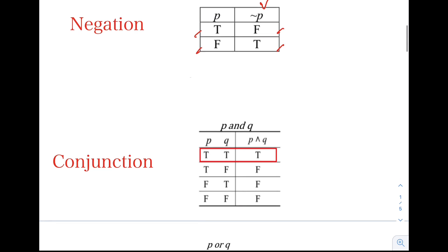Next is conjunction. The conjunction of compound statement P and Q is denoted by P ∧ Q. The conjunction operation tells us that if the two statements are both true, then the result is true. But if one of the statements is false, then the conjunction is false. As you notice in the table, if the two statements are true, the conjunction is also true. If one of the statements is false, then the conjunction is false.